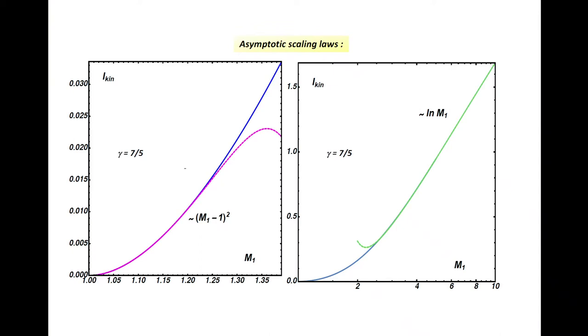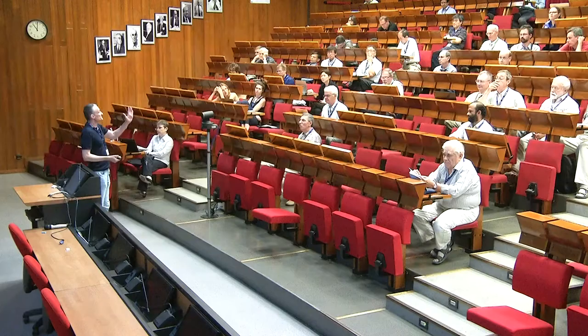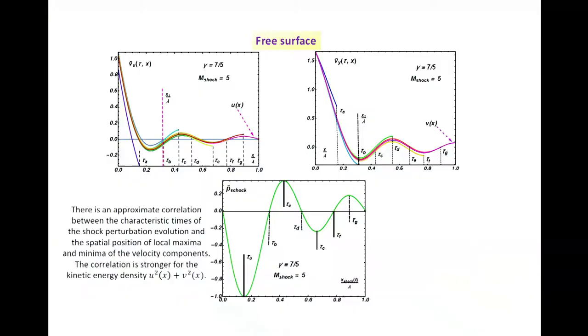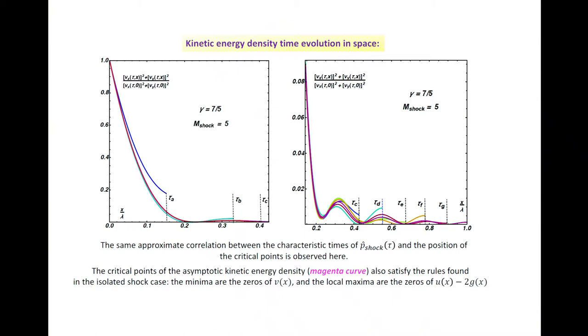We did the same for the free surface. For the free surface results are even nicer. Free surface means that at the surface where the shock started to move, pressure perturbations are obliged to be zero. Like the surface of the sea, this is a typical approximation. We see here tangential velocity, normal velocity for different times following the shock. Maxima and minima agree quite neatly with the maxima, minima and zero crossing of the shock pressure history. If we plot the kinetic energy density as a function of time, we still preserve the same correlation between these times and the times of the shock time evolution.